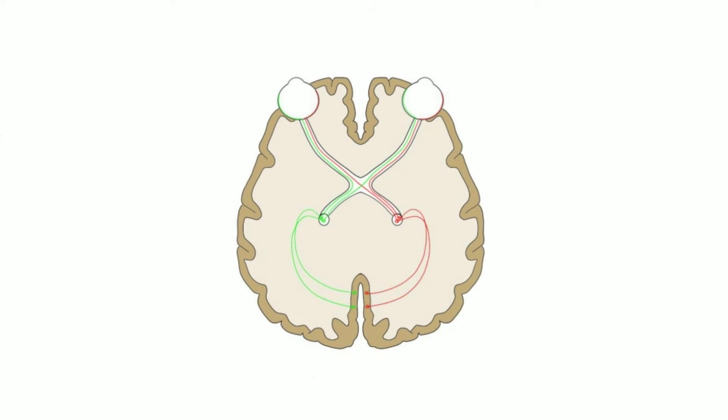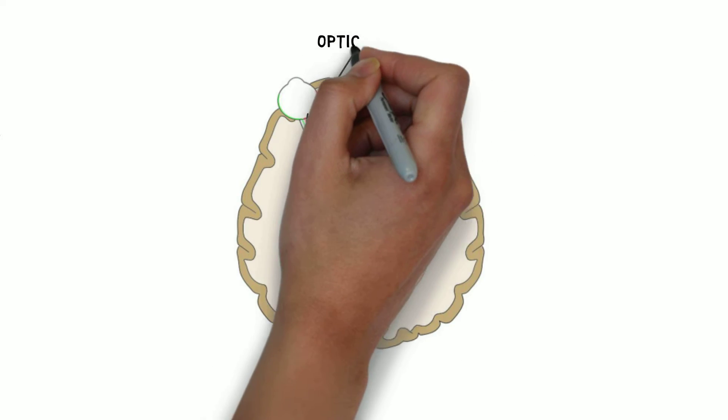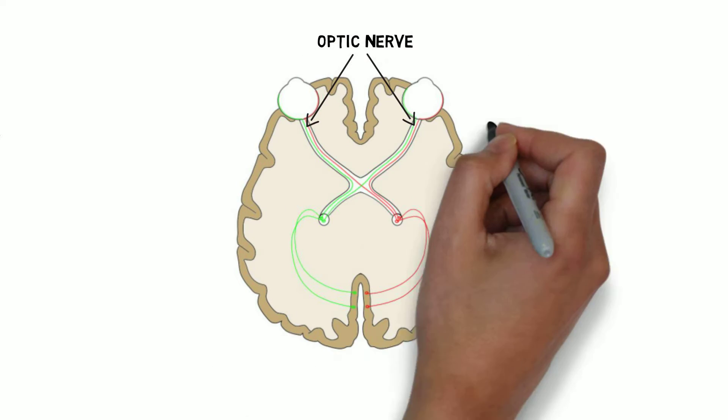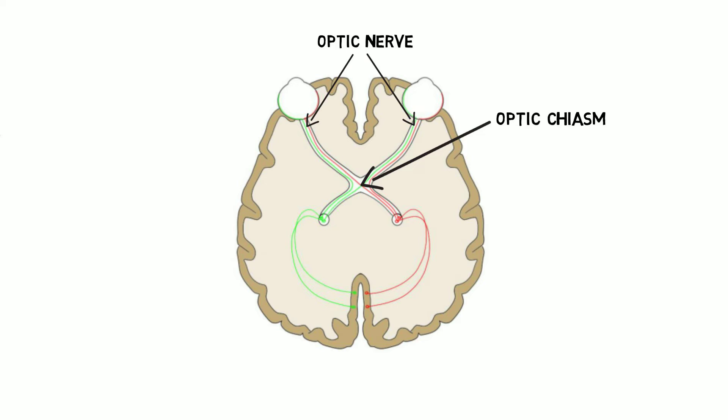The optic nerve leaves the eye and extends to a structure called the optic chiasm, where it meets the optic nerve from the other eye. At the optic chiasm, the optic nerve fibers carrying information from the sides of the retina closest to the nose cross over to the other side of the brain, while those carrying information from the sides of the retina closest to the temples remain on the side of the brain where they are.